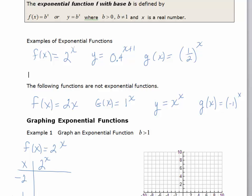y equals x to the x, you do have a variable exponent, but your base is also a variable. And for g(x) equals negative 1 to the x, your base is a negative number. So none of these are considered exponential functions.